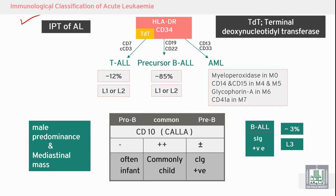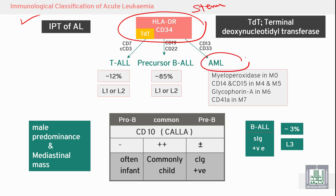Regarding immunological classification of acute leukemia, the markers of the stem cell are HLA-DR, CD34, and TdT. The stem cell gives rise to myeloid or lymphoid lineages. For myeloid stem cell AML, markers include CD13, CD33, myeloperoxidase positive in M0, M1, M4, M5; glycophorin in M6; and CD41 in M7. In acute lymphoblastic leukemia: B-ALL has CD19 and CD22; T-ALL has CD3 and CD7; common ALL has CD10.